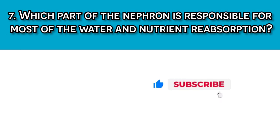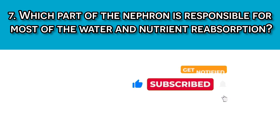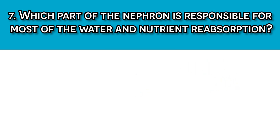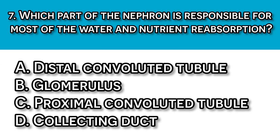Question number seven: Which part of the nephron is responsible for most of the water and nutrient reabsorption? A. Distal convoluted tubule, B. Glomerulus, C. Proximal convoluted tubule, D. Collecting ducts. The answer here should be C, the proximal convoluted tubule, because about 65 to 70% of filtrate reabsorption occurs there, including water, glucose, and amino acid reabsorption.